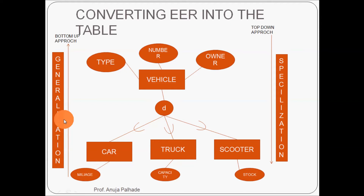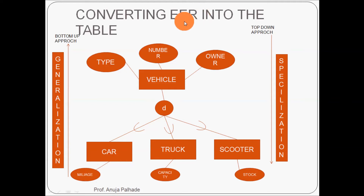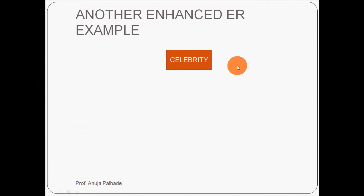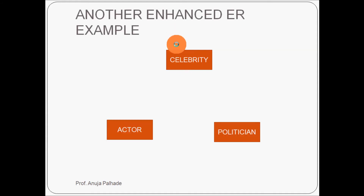So this is one very important concept enhanced from the EER diagram — how to convert EER into tables. Let's understand EER with another example. Let's take another entity: celebrity. Now let's add some more entities — suppose actor and politician.